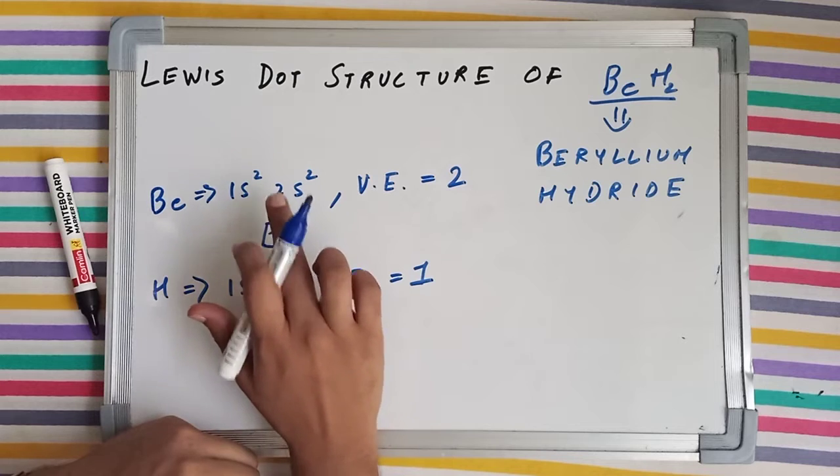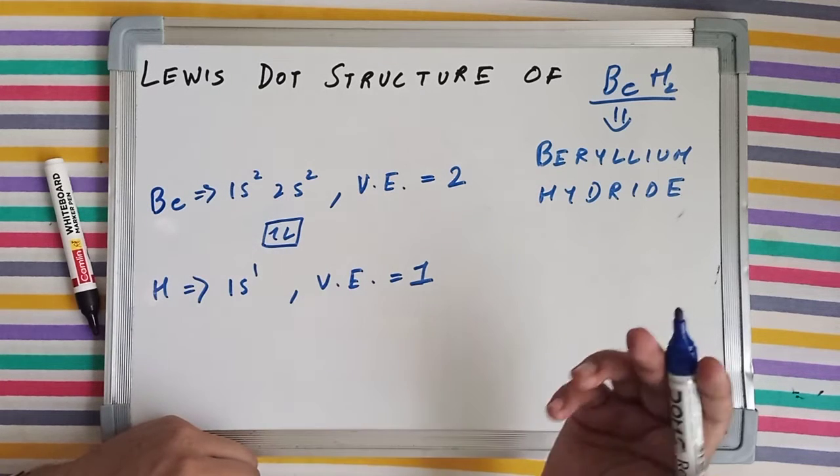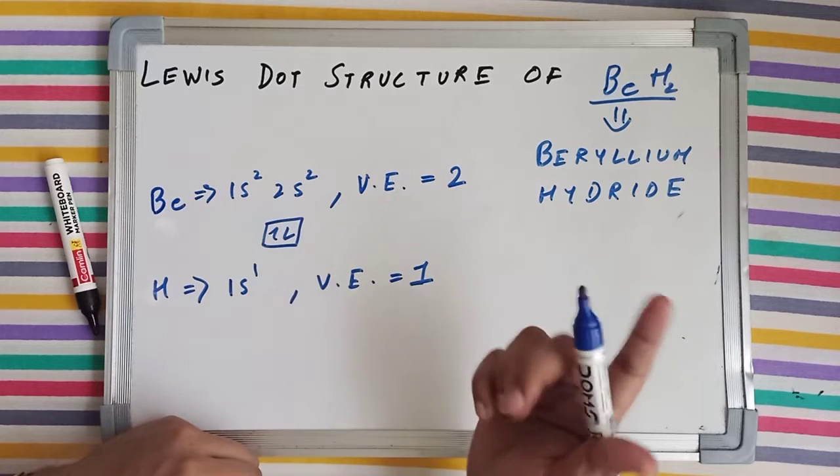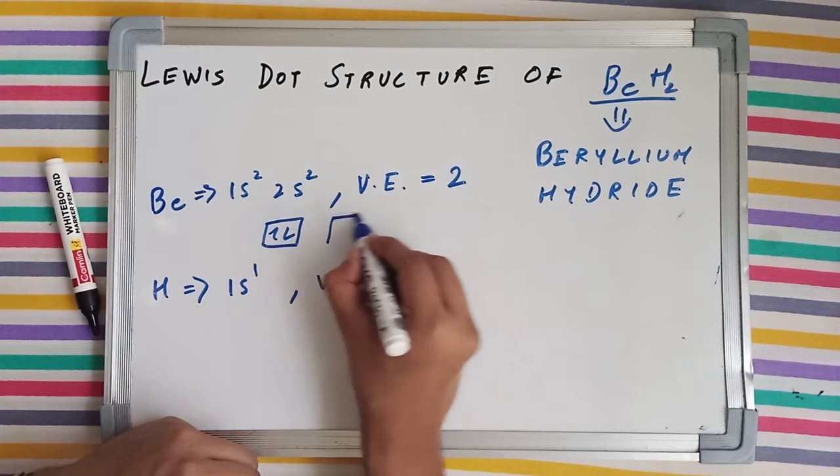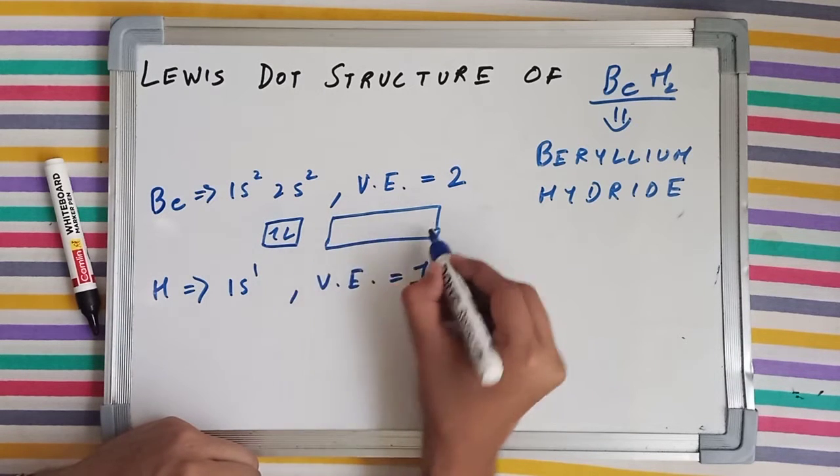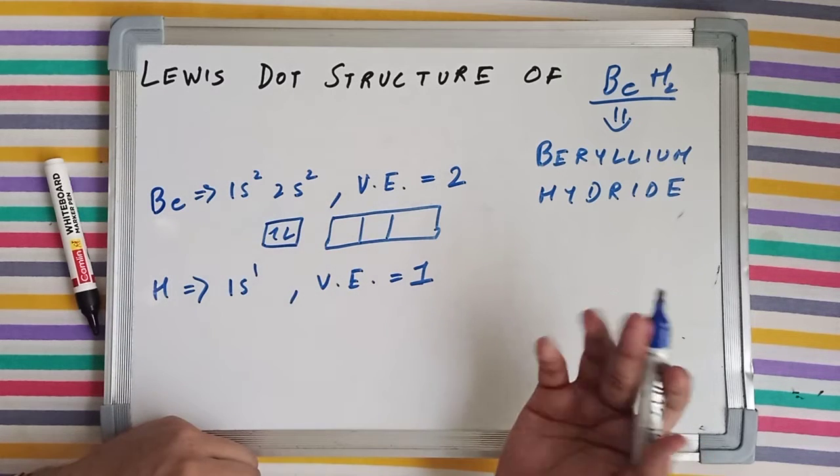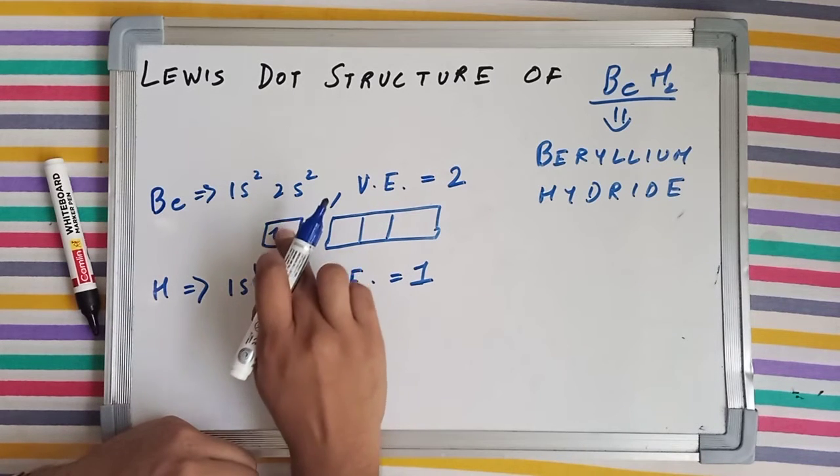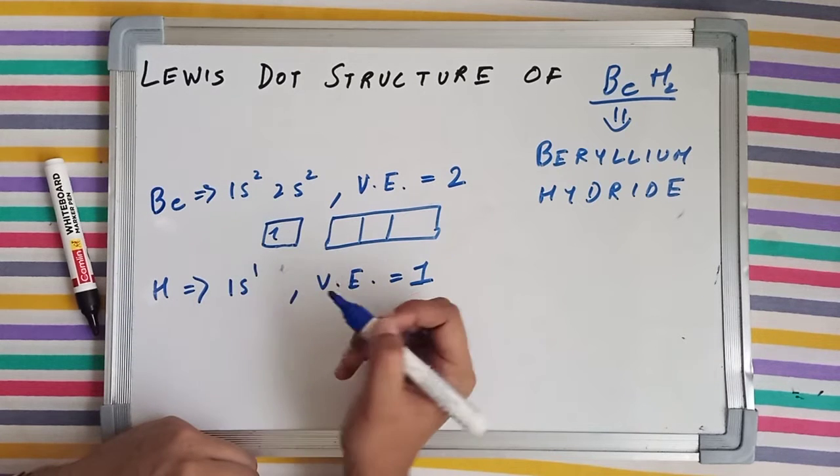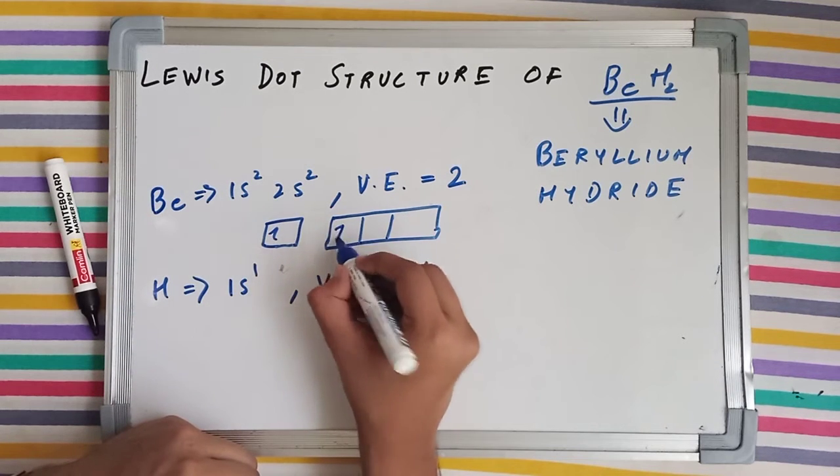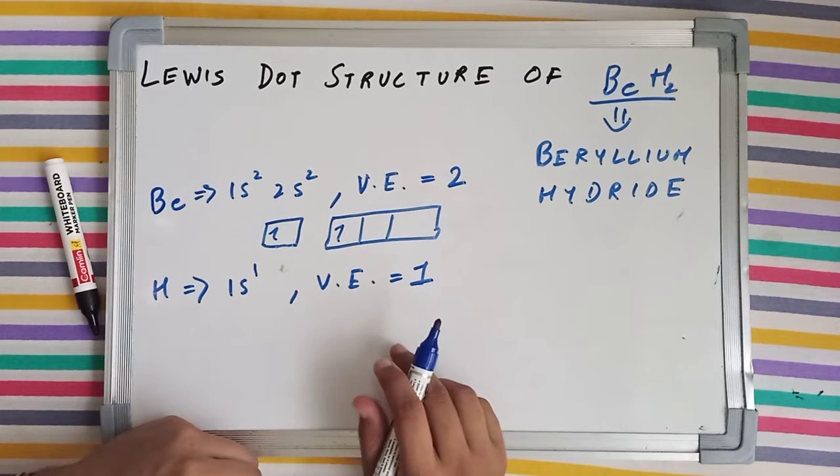In the second shell we've also got a different subshell apart from s, which is p. You've got a vacant 2p subshell having 3 orbitals, vacant 3 orbitals. And now there can be a shifting of electrons. One of the electrons from the 2s subshell jumps from its place and sits on one of the orbitals of the 2p subshell.